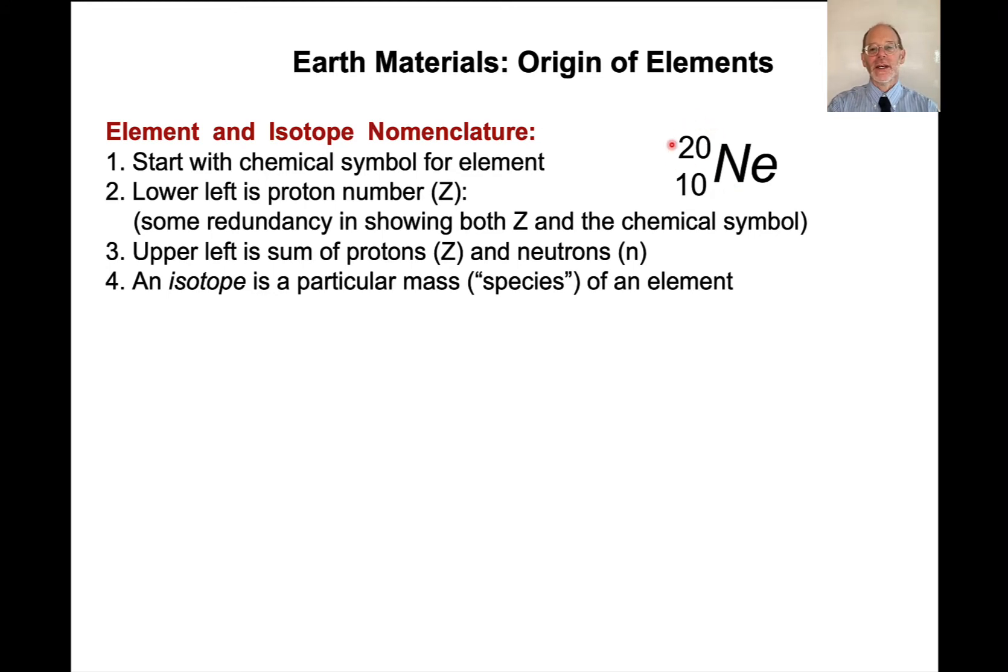The upper left-hand number is the sum of protons and neutrons. So there are 10 protons in this, and turns out there are 10 neutrons to give a mass of 20. An isotope is a particular mass, or you can think of it as a species of an element. There's more than one isotope of neon. Neon 20 is the most common isotope, but there's also neon 22.